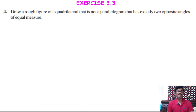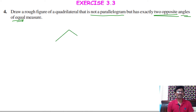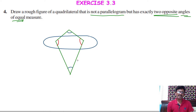Exercise 3.3, fourth question. Draw a rough figure of a quadrilateral that is not a parallelogram but has exactly two opposite angles of equal measure. We can draw a kite for this. In a kite, one pair of opposite angles marked in red are equal, but the other pair marked in blue are not equal. So one pair of opposite angles are equal and it is not a parallelogram.